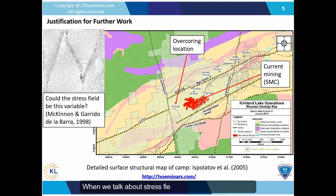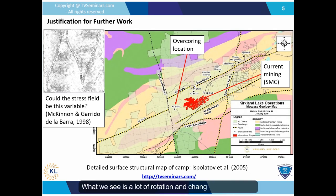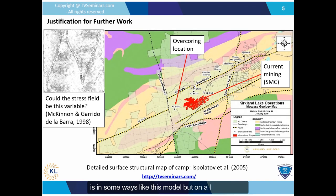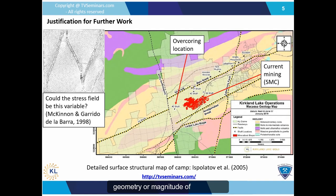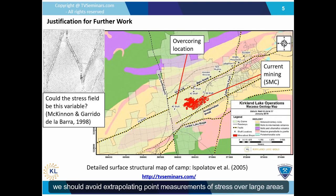When we talk about stress field variations related to faults, the figure in the upper left shows stress tensors in a model that simulated fracture growth. What we see is a lot of rotation and changes in magnitude both near the structures and farther away from them. We ask ourselves: what if the Kirkland Lake camp is in some way like this model on a larger scale — a system where the growth of large fractures significantly modifies the local stress fields. This implies we should avoid extrapolating point measurements of stress over large areas and give attention to the local stress tensor around new mining zones.